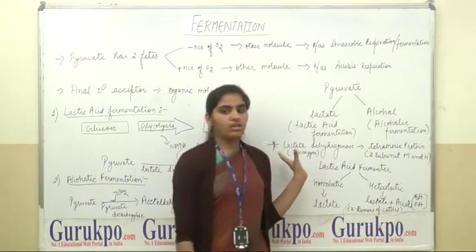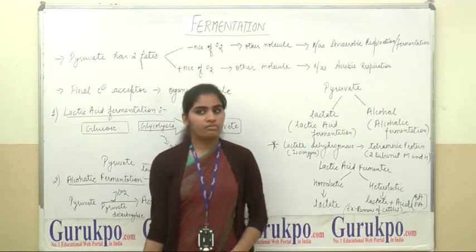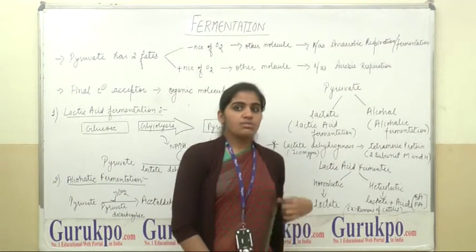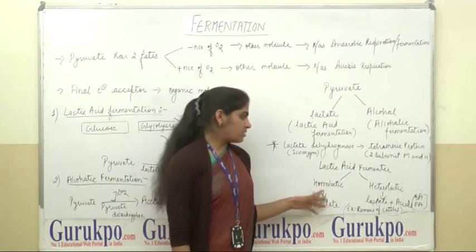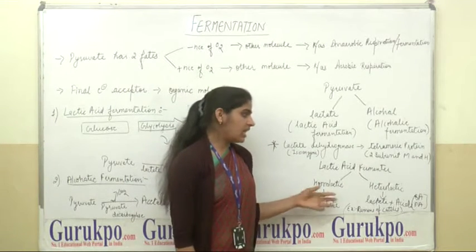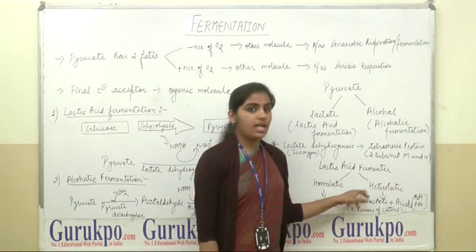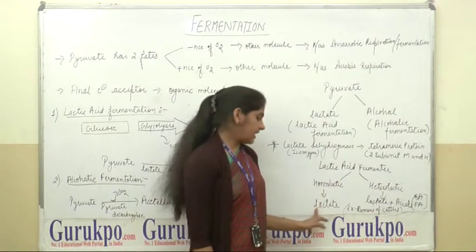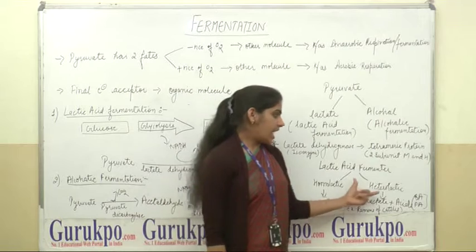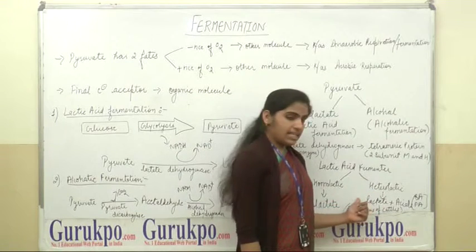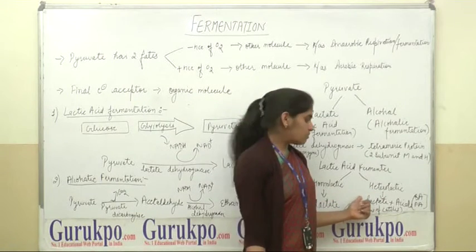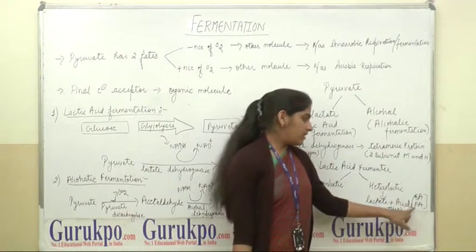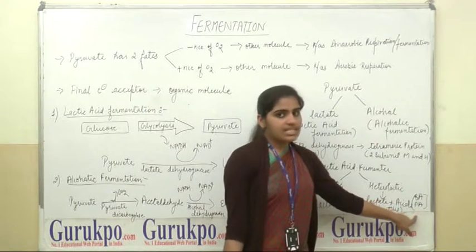Micro-organisms use different types of fermenters for lactic acid formation. There are two types: homo-lactic and hetero-lactic. If the homo-lactic fermenter is used, only lactic acid is formed. Whereas, in hetero-lactic fermentation, lactic acid is formed along with various other acids, like butyric acid, propionic acid, etc.